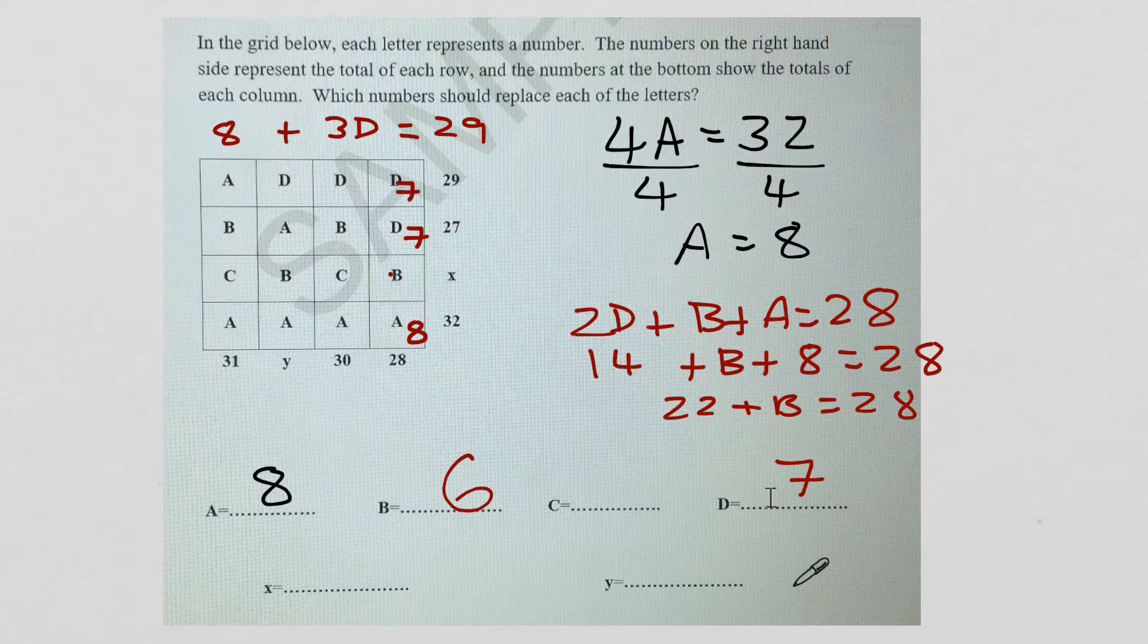And then from that, we should be able to find out what c equals quite easily. If b is 6, a is 8. And then the missing one, 8 plus 8 is 16, plus 6 is 22. So it's 31. That means that c equals 9.